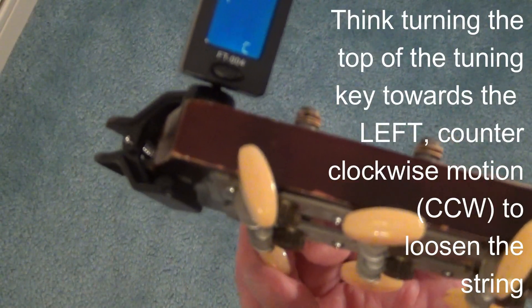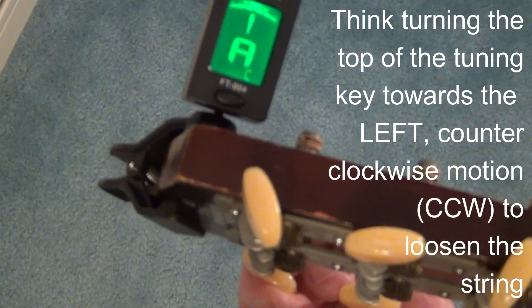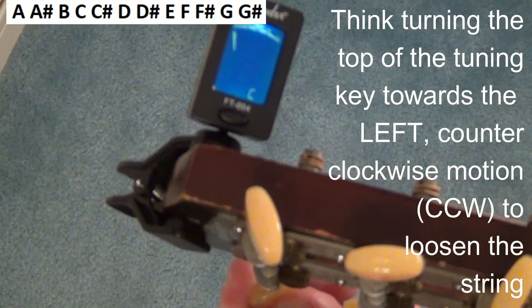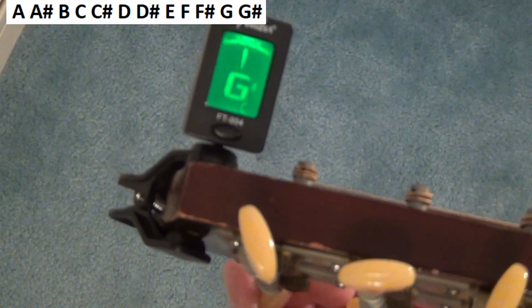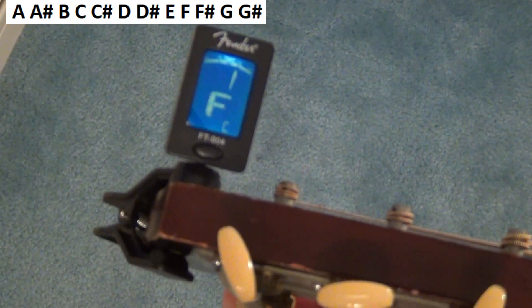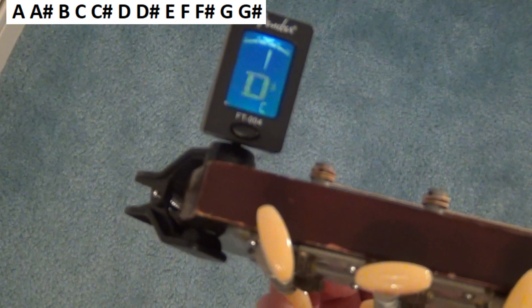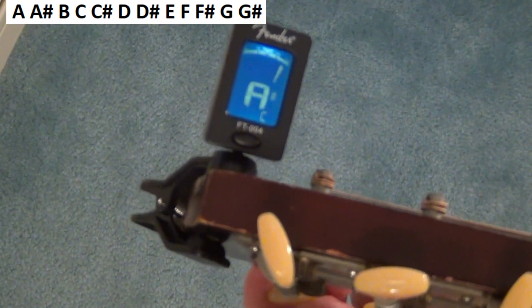Next one will be A. And then to loosen it, I'm going to go to the left, which is actually counterclockwise. You'll hear the pitch drop. G, F, we missed F-sharp. E, and so on, all the way back down to the A.